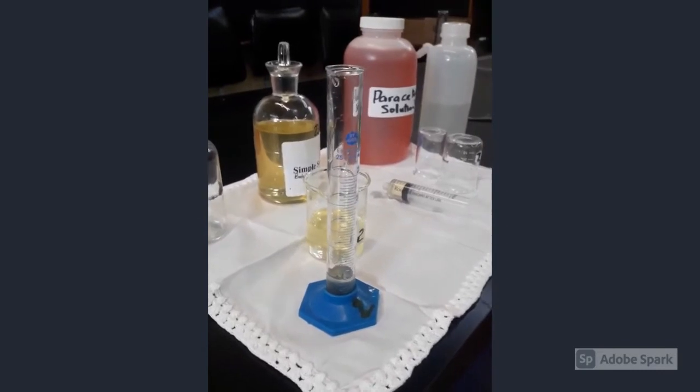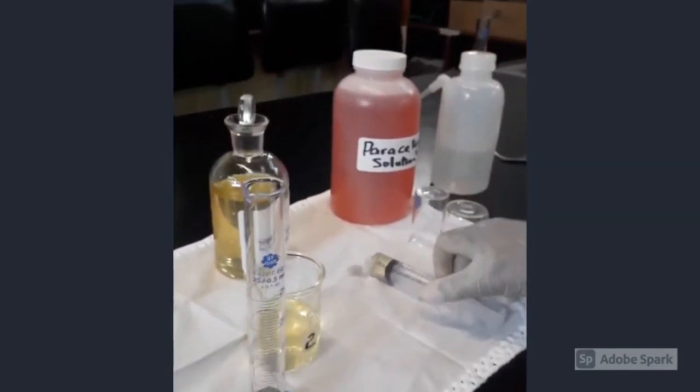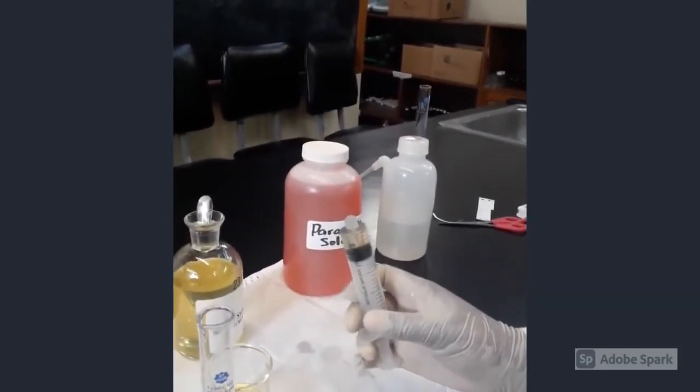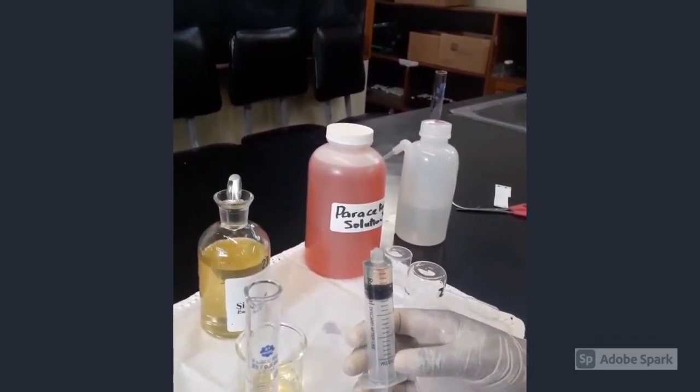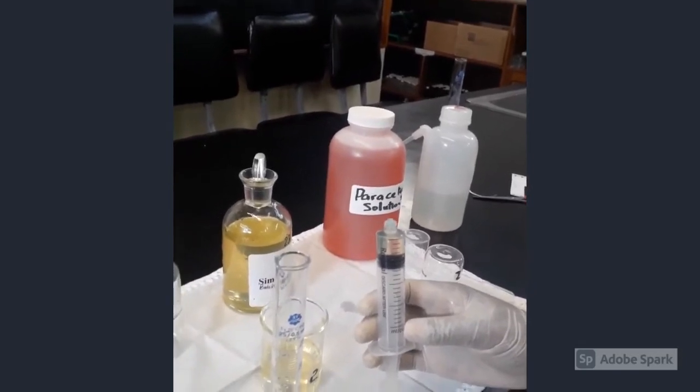So we are explaining to you now that when you have a viscous liquid, the best instrument to use is your syringes. So you are required to have your own different sizes of syringe from 0.5 to about 60 milliliters depending on what you need.